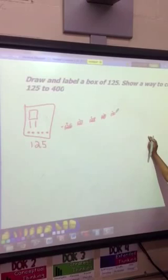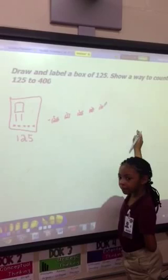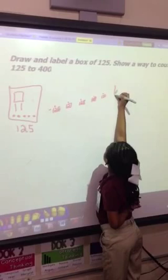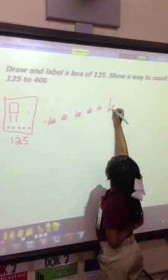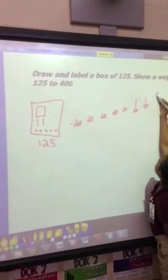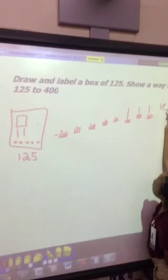So she's going to draw quick tens until she gets to the next benchmark number, which would be the hundreds. So we're going to count quieter with her and slower. Ready, Kayla? 140. 150. 160. 170. 180. 190. 200.